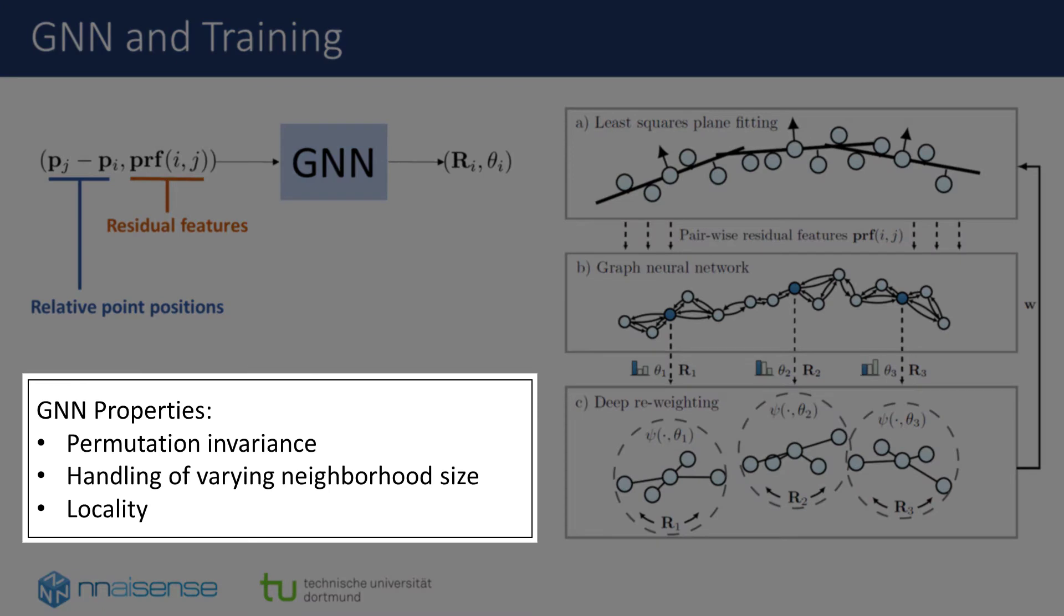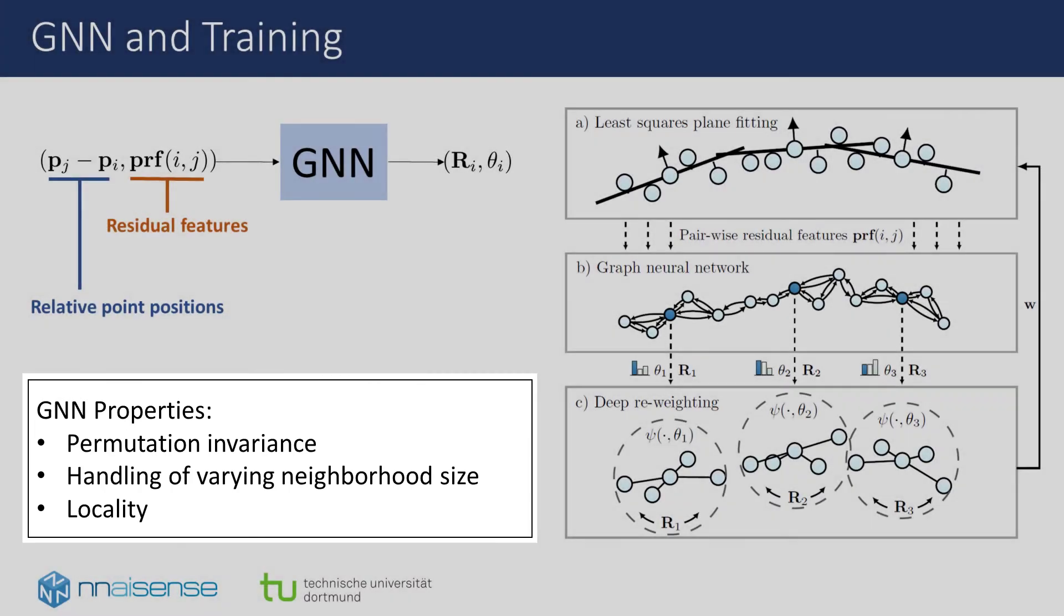The GNN provides us with further advantages. GNNs are point permutation invariant and can be applied on graphs with varying neighborhood size, for example radius graphs. They are also local, so that the network can be applied to partial point clouds. The whole procedure is shown on the right.